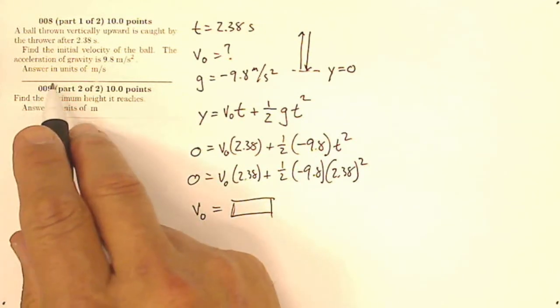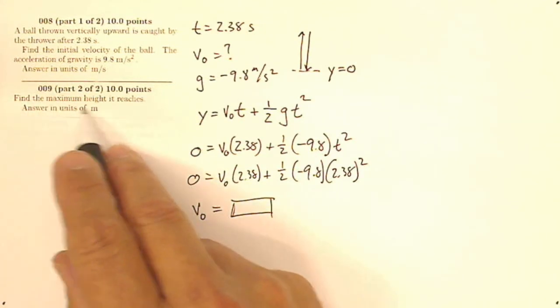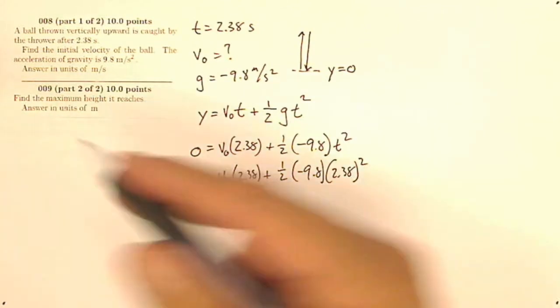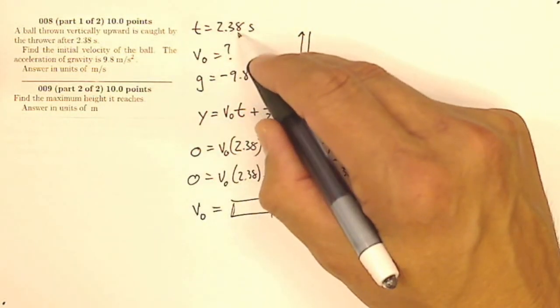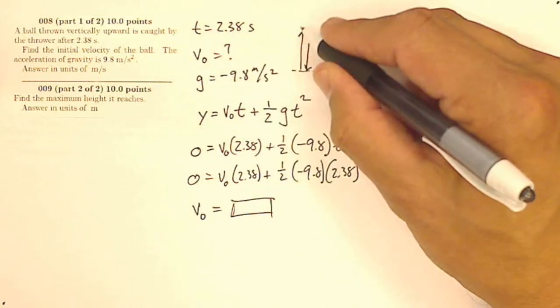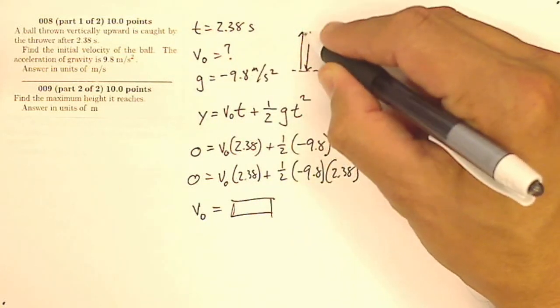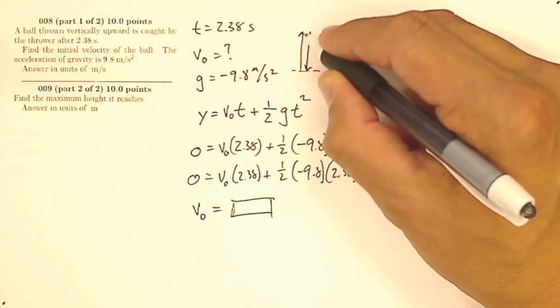Number two says, sorry, question number nine. Part two says, find the maximum height it reaches. So now I need a displacement at the maximum height. Well, wait a second. That's not at this time. That's the time it takes to go up and back down. I want to know the maximum height. I want to know what it's doing up here. So that happens if I remember my tricks. If I go up and back down,